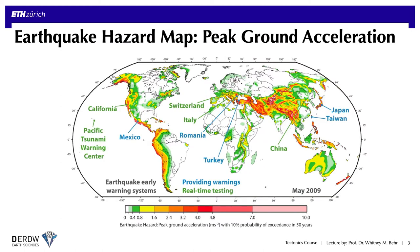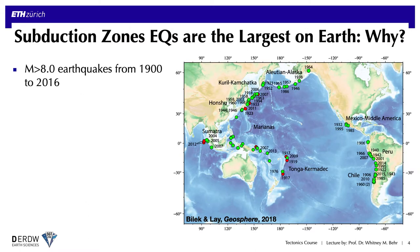Subduction zones represent the greatest source of seismic hazard because, unlike earthquakes common in mid-ocean ridge settings or transform faults, subduction zones are very commonly adjacent to land masses. They therefore have high potential for ground accelerations that can affect buildings and property. Overall, subduction zones have hosted several tens of magnitude 8 and above earthquakes just in the past century.